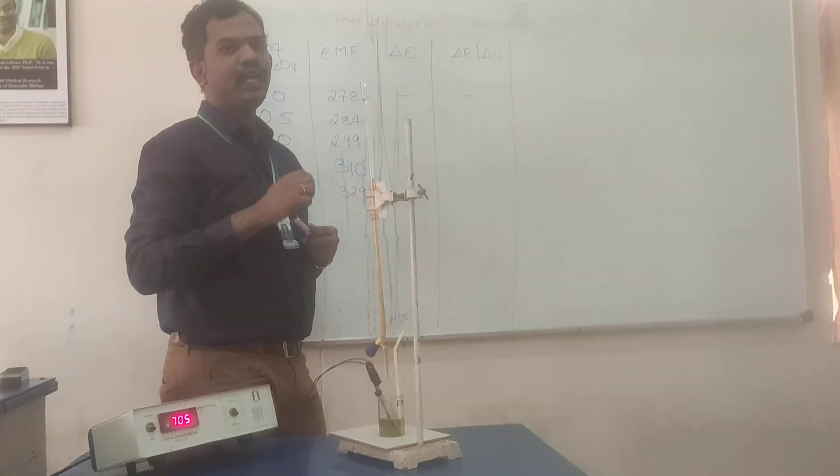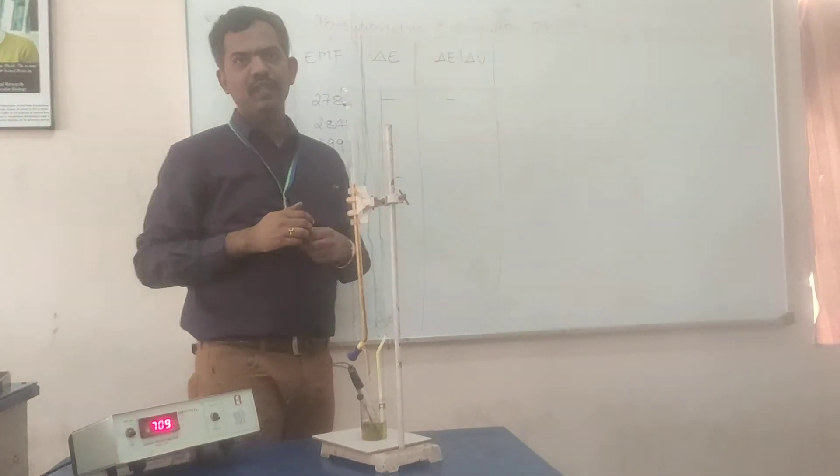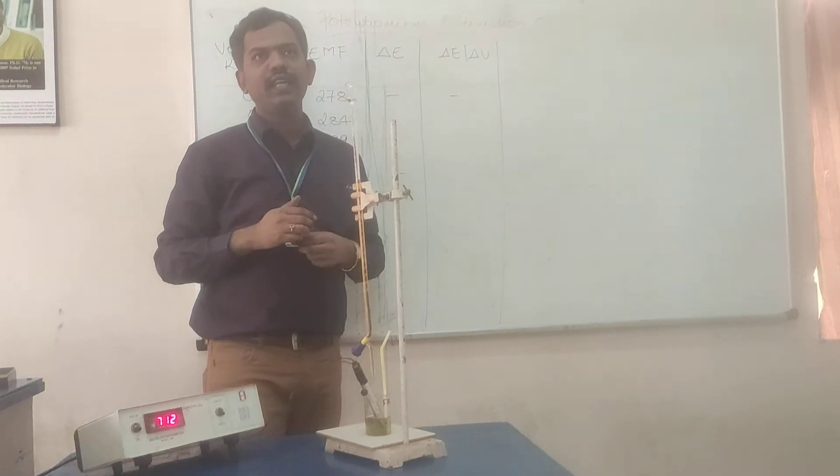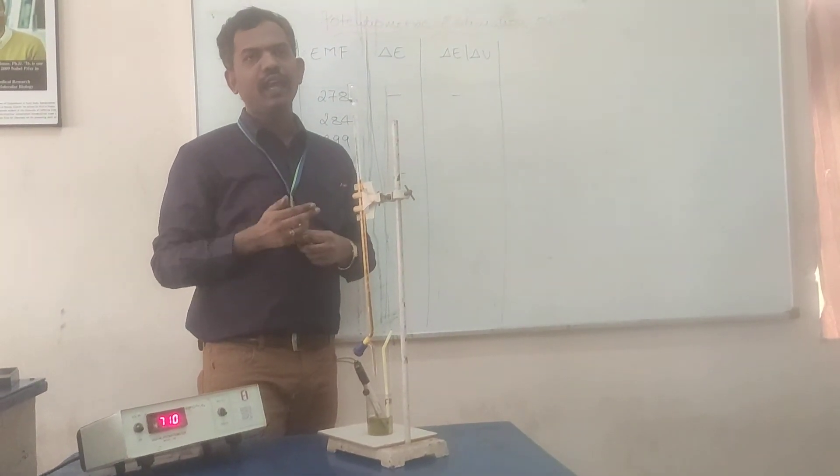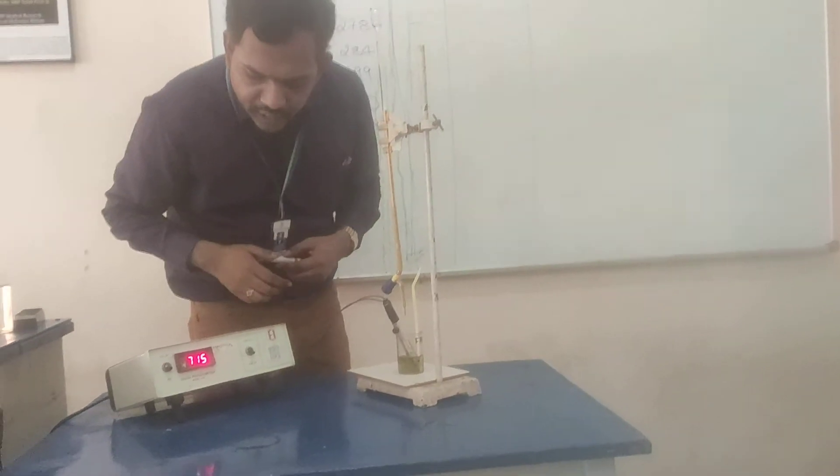So, we are going to plot a graph of delta E by delta V versus volume of K₂Cr₂O₇. After that, we get volume of K₂Cr₂O₇ required to titrate the FAS. Remember, we are going to calculate the normality, strength, and weight of FAS in the given sample.